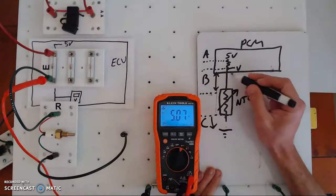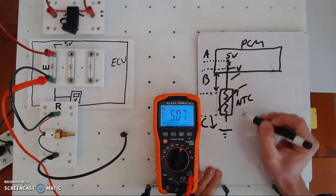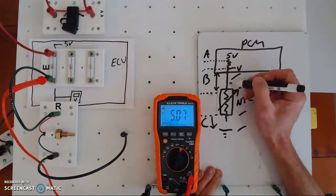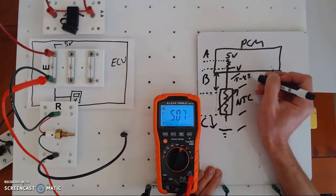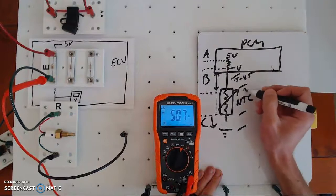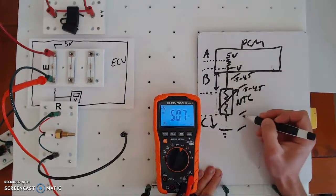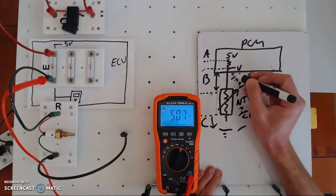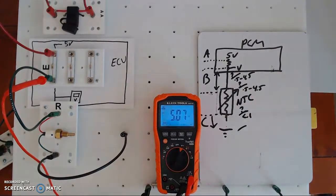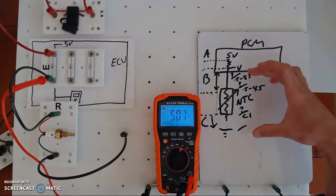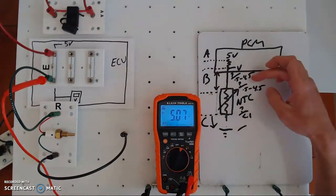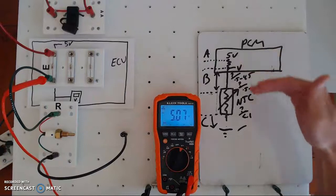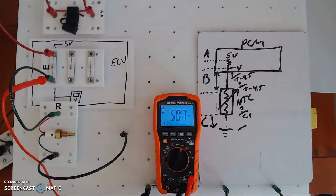If I had 5 volts here and 5 volts at the sensor, I know the open is down in the ground. If I had 5 volts here and zero at the sensor, I know my open is in that sensor itself. This is why it's really important to use fraction symbols at your measuring points — on the bottom write down expected values, and on the top write what you actually measure. For section B the expected range is 0.5 to 4.5 volts, and for section C expected is less than 0.1 volts. That keeps you on track as you work through the circuit.